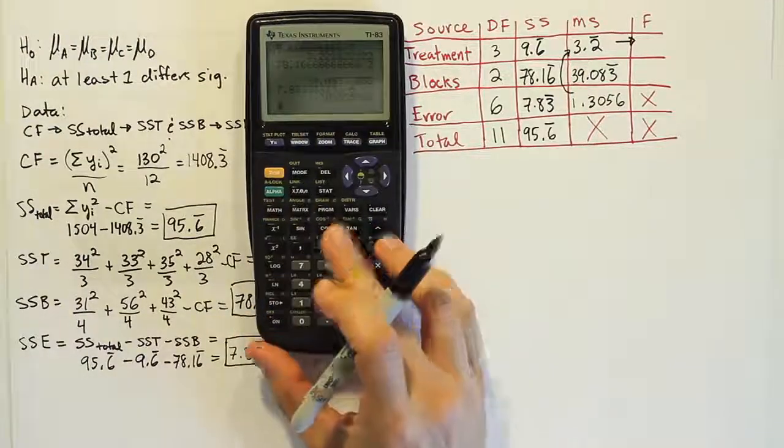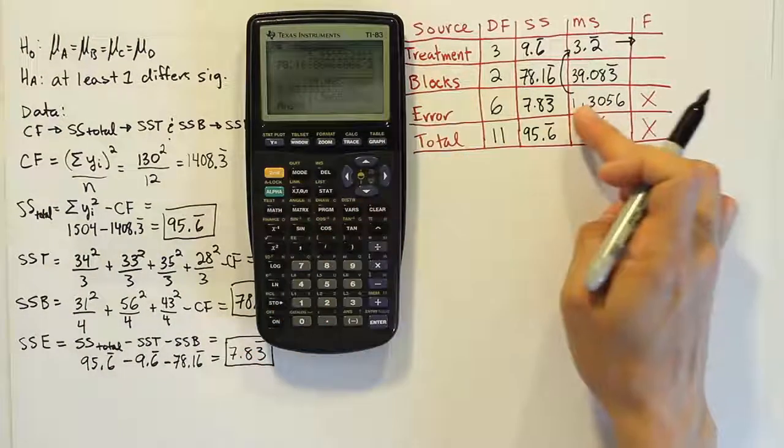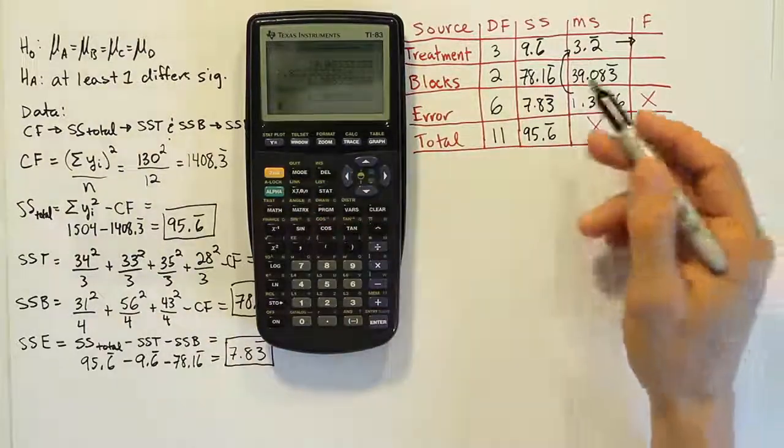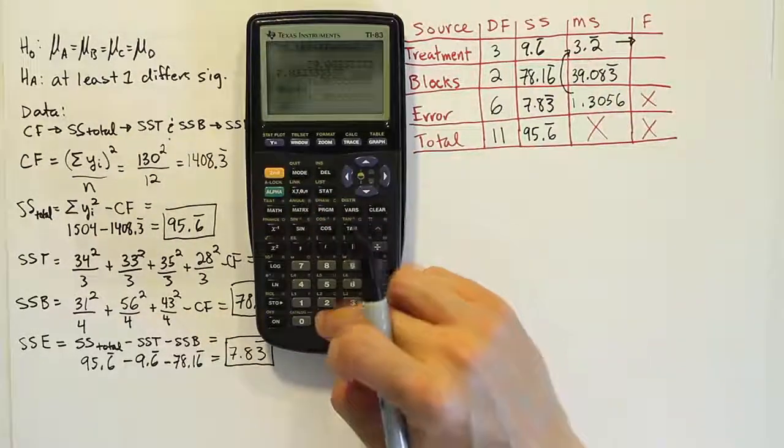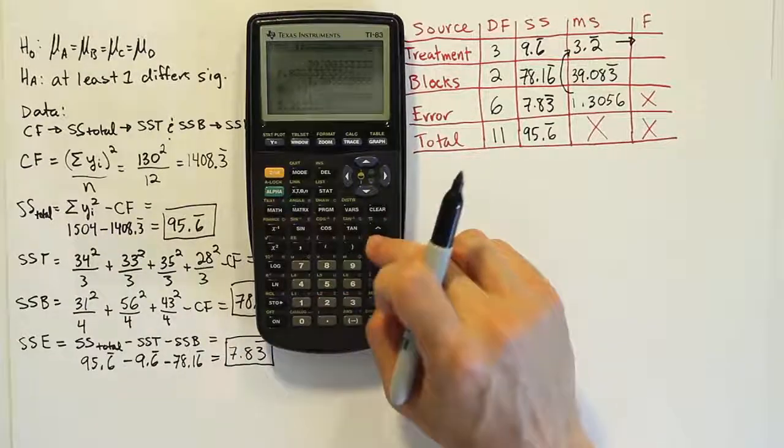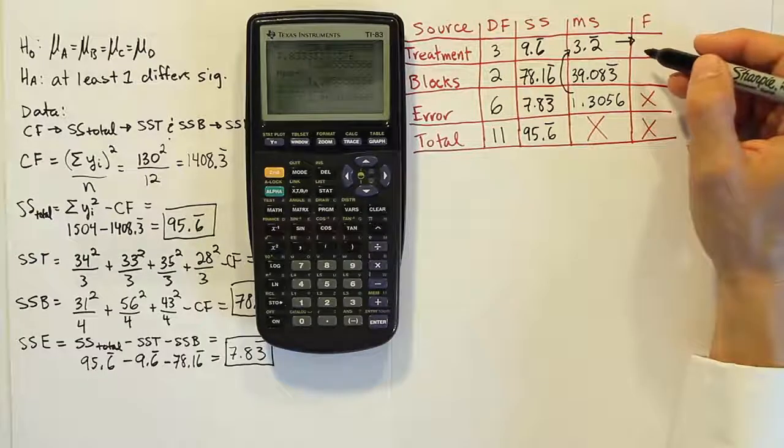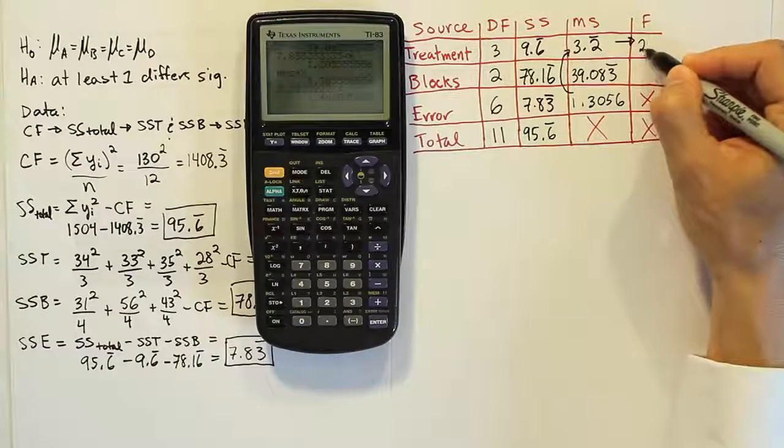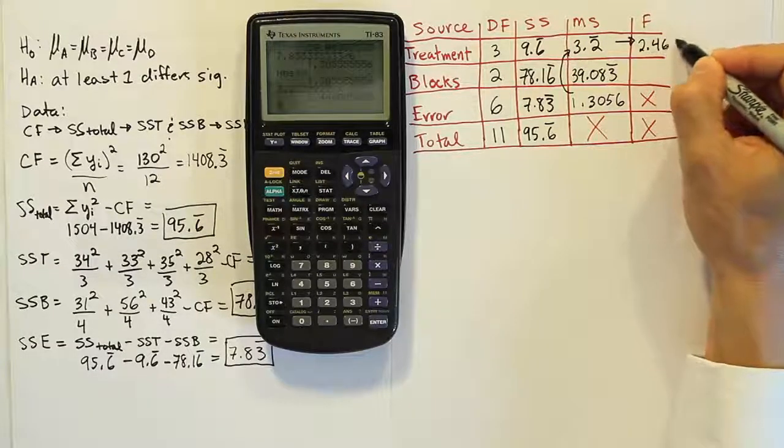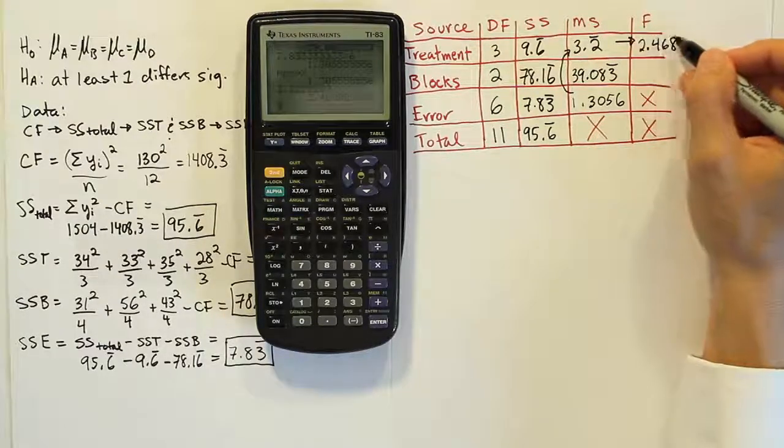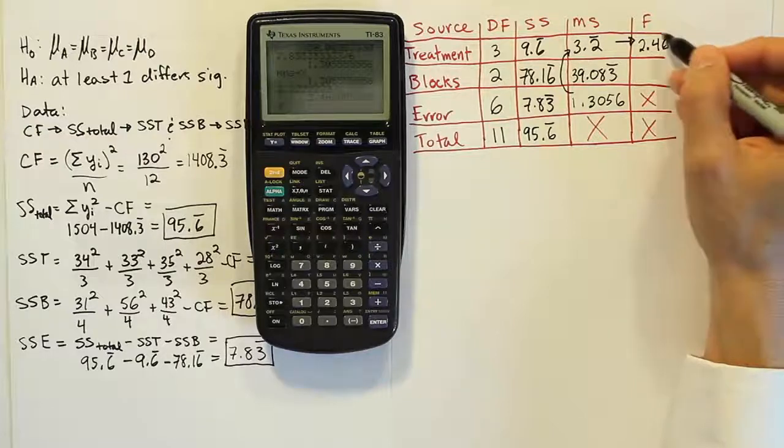So I'm going to store my error, which is the 1.3056 in my calculator as x. Because I'm going to use it twice here. And then I'm going to do 3.22222 divided by that mean square error. And we get 2.468. So, that's my F test statistic for the treatments.